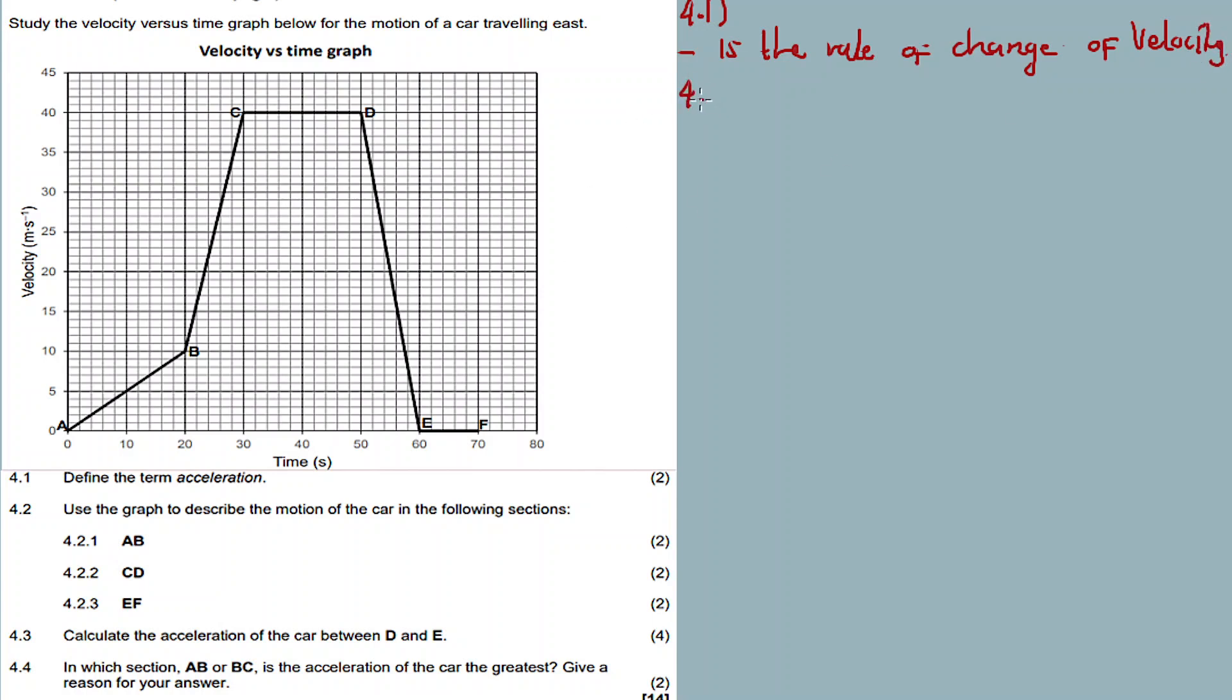Then with 4.2, now the fun begins. Use the graph to describe the motion of the car in the following sections: A-B, C-D, and E-F. So we are going to focus on these sections now - A-B, C-D, and E-F. Describe the motion of the car in these sections. Section A-B, what's happening?